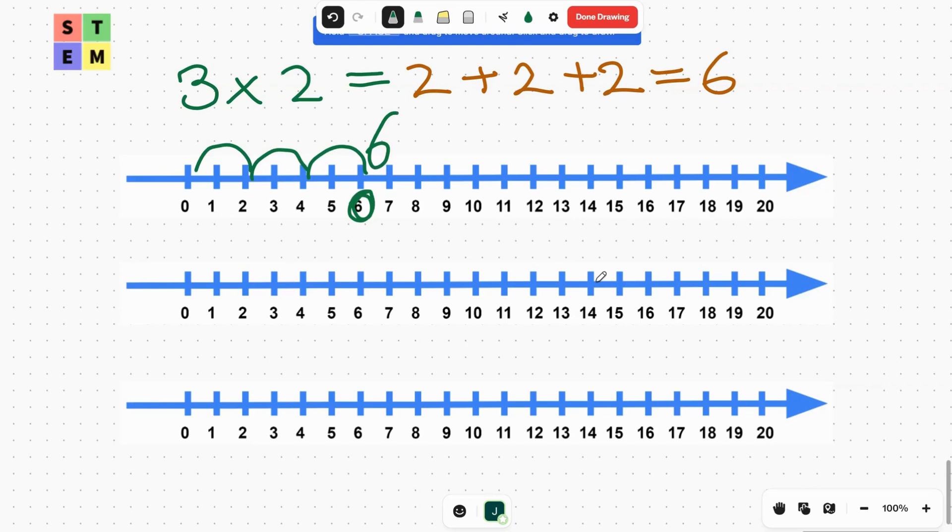We can try 4 × 3 this time. How can we get 4 × 3? We have one three, two threes, three threes, and four hops of three. We get 12 here.